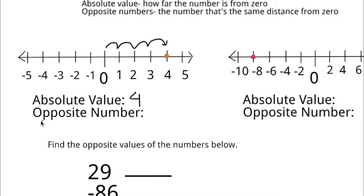Now for your opposite number, you just skip four units but in the opposite direction. So one, two, three, four. And your answer is negative four.